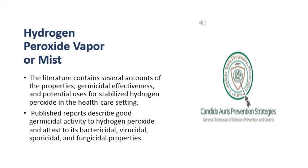Another technology is the hydrogen peroxide vapor or mist machine, also called a fumigation machine. It is well-documented in the literature. Published reports describe the good germicidal activity of hydrogen peroxide and attest to its bactericidal, viricidal, sporicidal, and fungicidal properties, particularly when used in a fumigation machine.